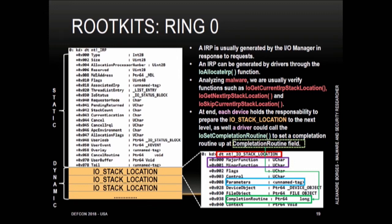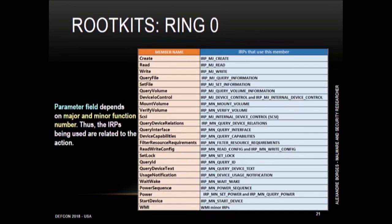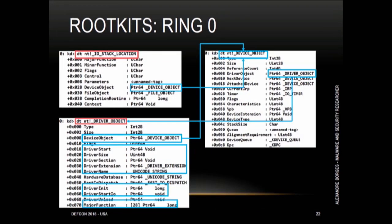At the bottom right, we have the IO stack location structure composed by the major function field, which holds pointers to the dispatch routines, a parameters field, and a completion context field. The parameters field depends on the major and minor functions. In the next slide we have a complete list of IRP types. Here we have a complete relationship between the IO stack location structure, device object structure, and driver object structure. It's a good slide to read.